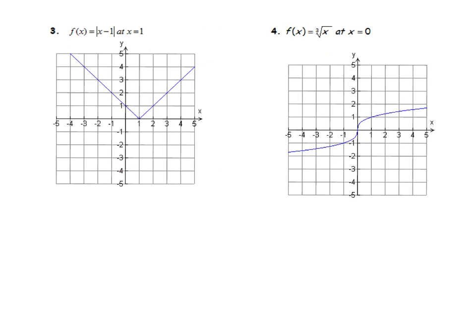Let's look at f(x) = |x - 1| at x = 1. So x = 1 is right here. You notice there's a corner there, right? It's a very sharp corner in that graph.